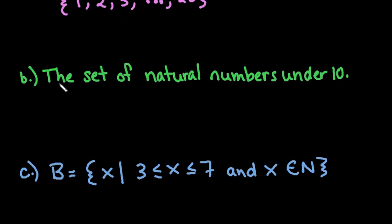The next one is the set of natural numbers under 10. Natural numbers are also known as counting numbers, so this could also be written as the set of counting numbers under 10. The notation we use for natural numbers is a capital N. If you see a capital N in set notation, that means it's talking about natural numbers.